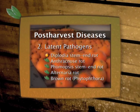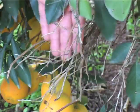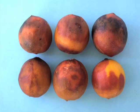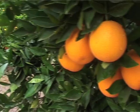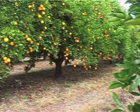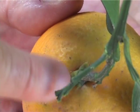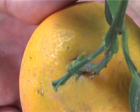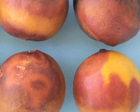The fungus that causes Diplodia stem end rot sporulates on deadwood, including bark and twigs, and can survive from one season to the next. Diplodia spores, as is the case with Phomopsis and Anthracnose spores, are washed down during rainfall onto the dead calyx tissue or onto the rind or under the calyx. The calyx is the button or stem end of the fruit. Here the spores remain latent until conditions are favourable for infections to develop, such as during degreening, when the fruit ages, or when the calyx dies and abscises.